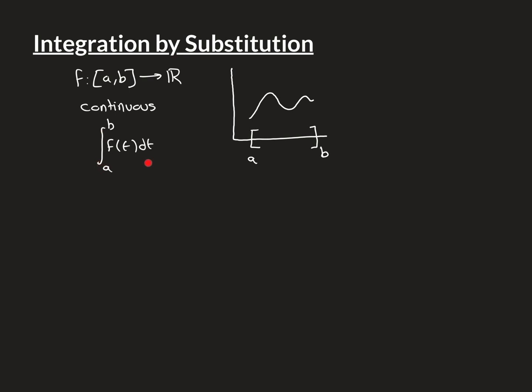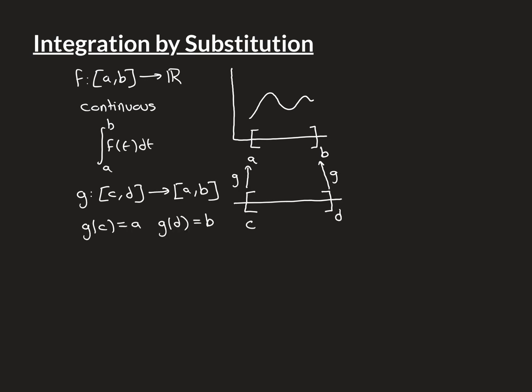We are going to consider the integral of this function over the interval a, b — specifically the integral from a to b of f(t) dt. This integral is going to exist because the function is integrable over the interval a, b, since it's continuous everywhere over that interval. The whole idea of integration by substitution is that we create another function g, from a second interval c, d, which maps points on c, d into our initial interval a, b.